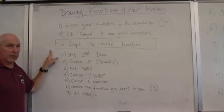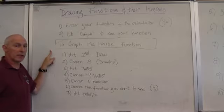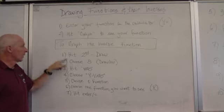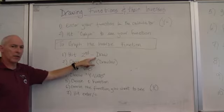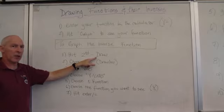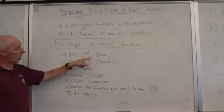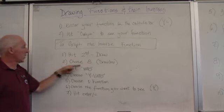Now to graph the inverse of the function we're going to use several new keys that we haven't used before. You'll hit the second and then the draw key. The draw key is written in blue and it's right above PRGM. So you'll hit second and then draw. Choose option number eight.